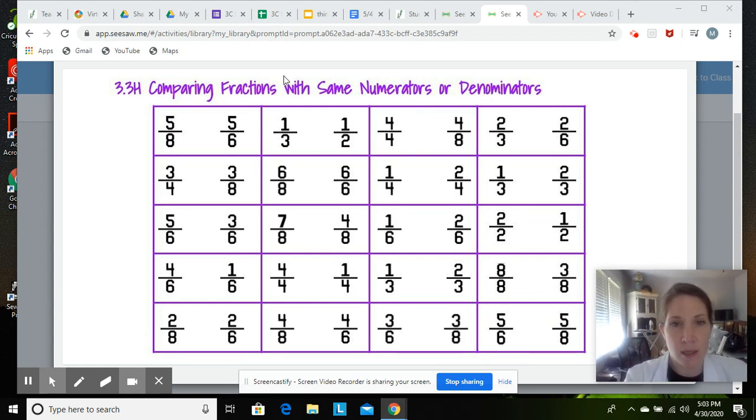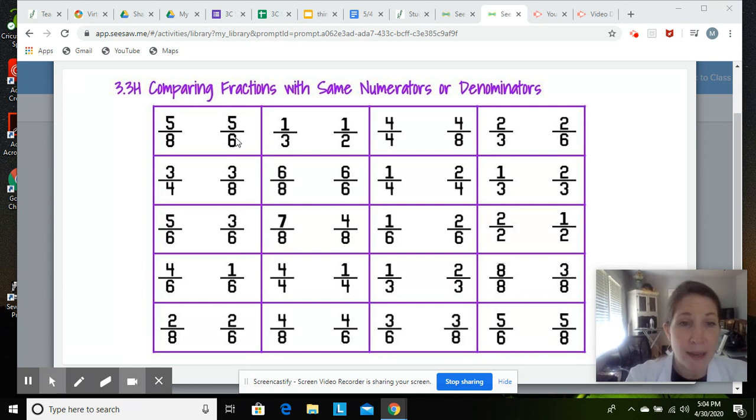So I want us to notice some things as we just observe this page here. In the first box, if I'm looking at these two fractions, and again we're still working with fractions today, what do I notice is the same? What numbers, what is the same, the numerator or the denominator? Well, surely you said the denominator, because as I look at these, I see 5 is the numerator of this first fraction, 5/8, and 5 is the numerator of the second fraction with 5/6. So we are comparing fractions, this first box here, with the same numerator.